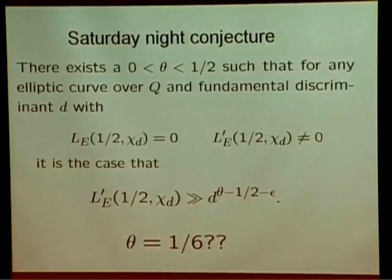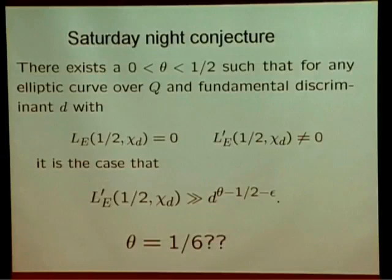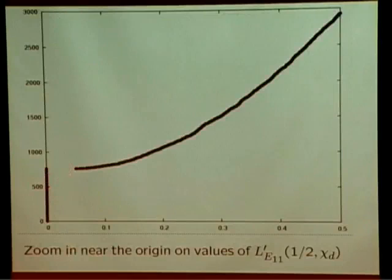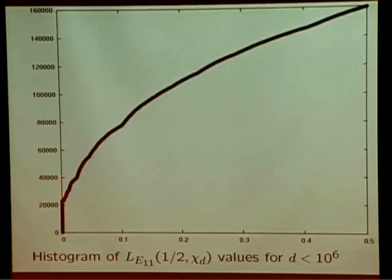Here's L' values for D up to 10^6. If you zoom in, there's a big jump — that's kind of what I'm talking about. If you do the same graph but for L values, the discretization is fine enough that you can't even see it, whereas for L', it's huge.